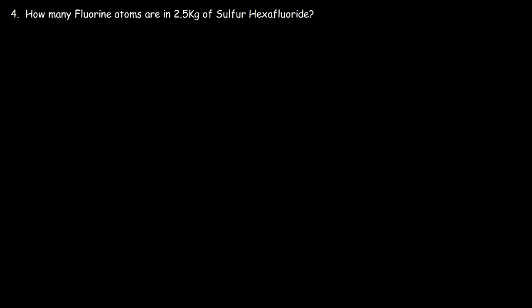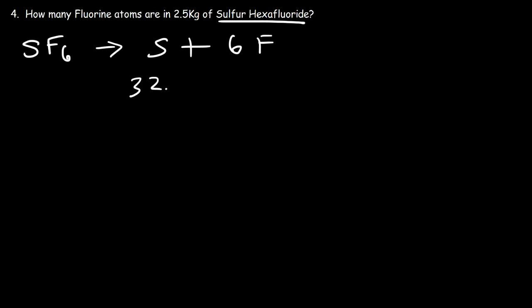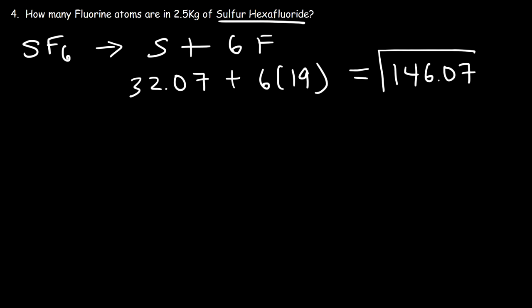Number four: how many fluorine atoms are in 2.5 kilograms of sulfur hexafluoride? Let's write the chemical formula of sulfur hexafluoride. We have one sulfur atom but six fluorine atoms — hexa is associated with six. Now let's find the molar mass. Sulfur has an atomic mass of 32.07, and fluorine has a mass of 19. So six times 19 is 114, plus 32.07, giving us a molar mass of 146.07 grams per mole.